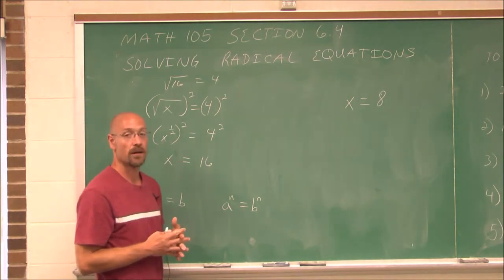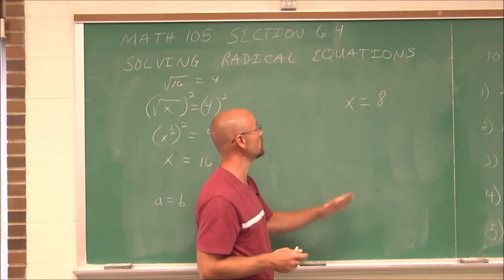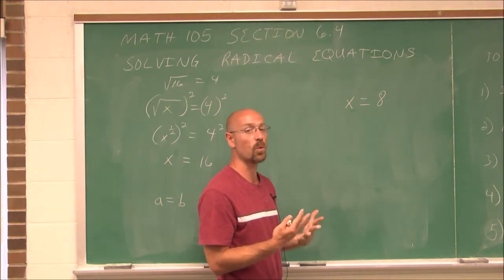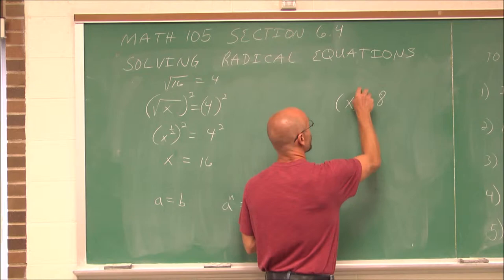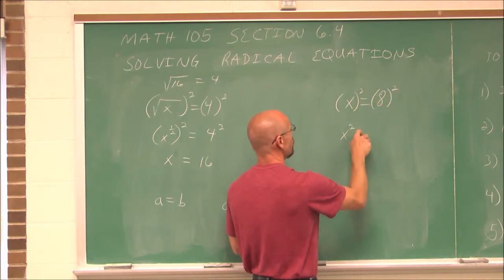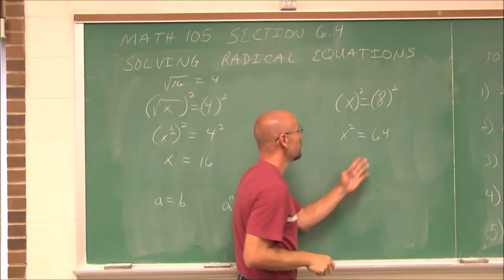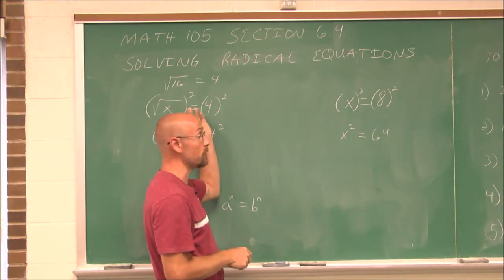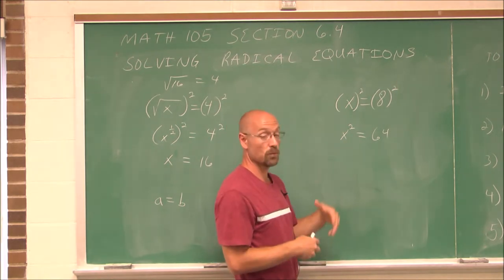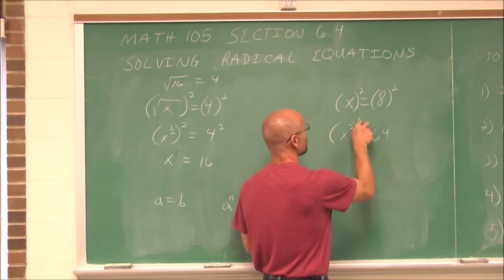Let's look at an example of the simplest kind to see where we might get an extraneous solution. Take x equals 8 and square both sides. x squared is x squared, and 8 squared is 64. Now I'm going to introduce a square root, which is essentially the 1/2 power. If I raise this side to the 1/2, and I raise this side to the 1/2, or essentially rewrite it this way, because the 1/2 power is a square root.